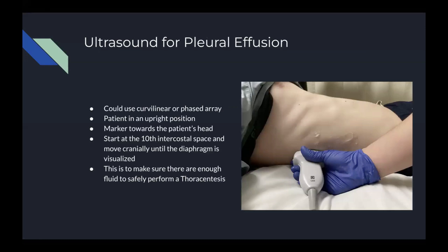To perform a thoracentesis, you first have to make sure there is enough pleural effusion to create a safe zone so you can insert a needle and have it stay between the pleura and the lung, and not puncture the lung causing a pneumothorax. To do so, we would use a curvilinear or phased array probe with the patient in an upright position, marker towards the patient's head. You start at the 10th intercostal space and move cranially until the diaphragm is visualized, to confirm there is enough fluid space to place a needle through.